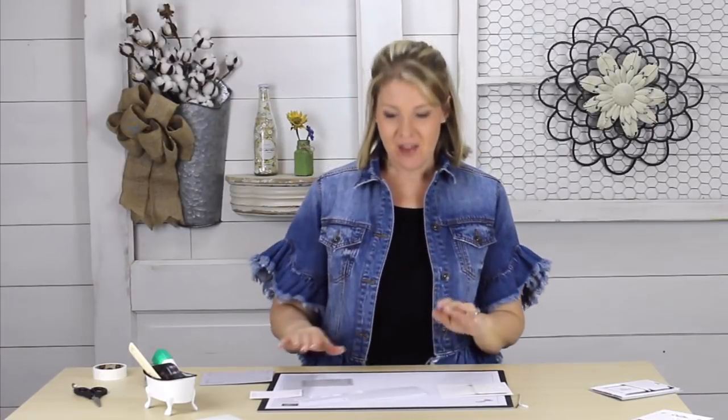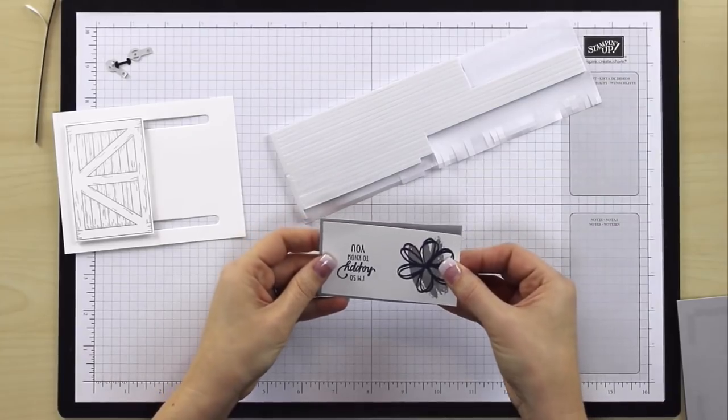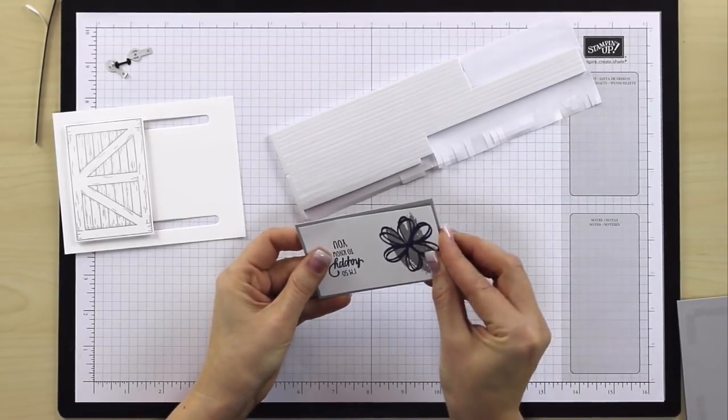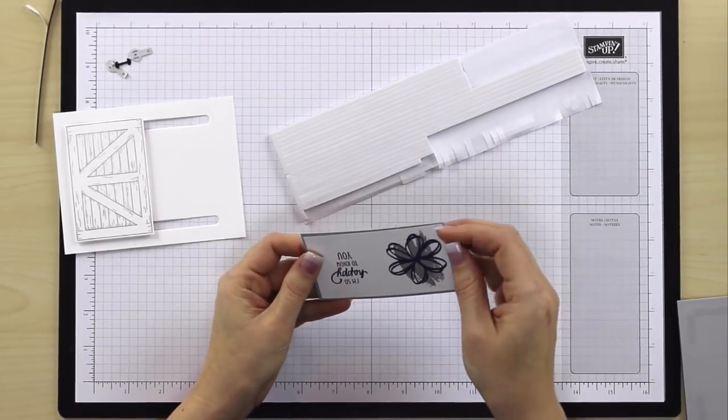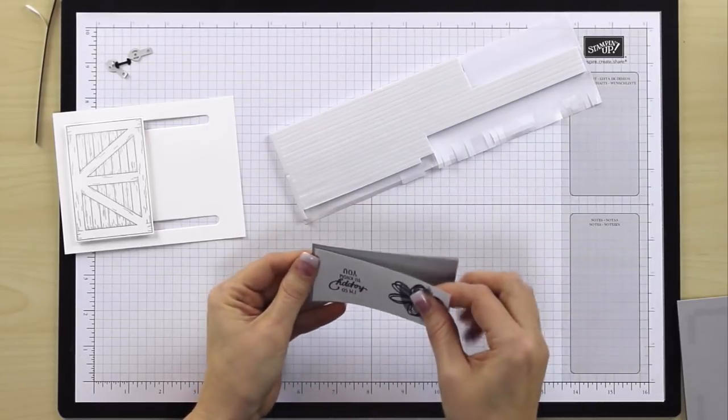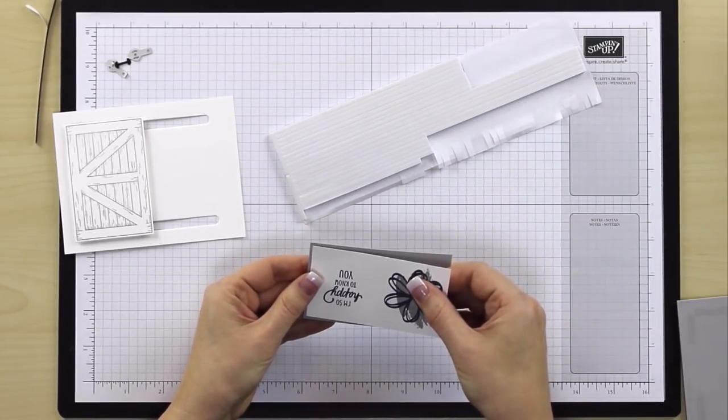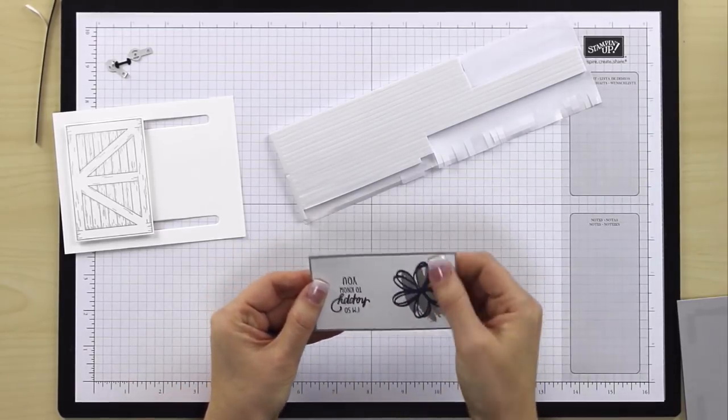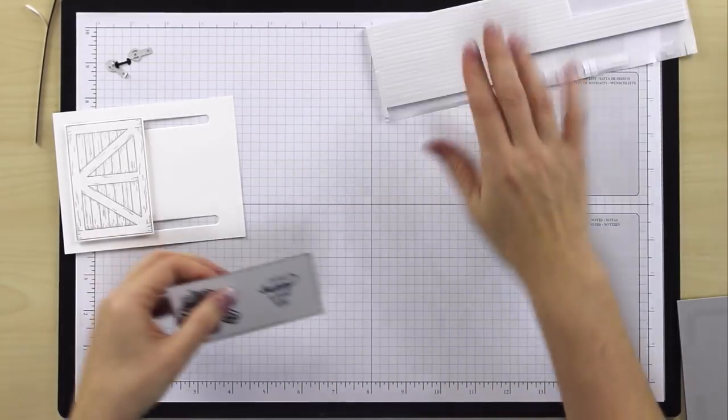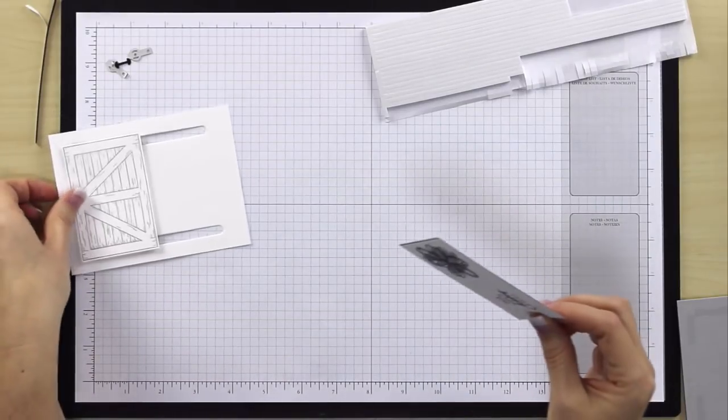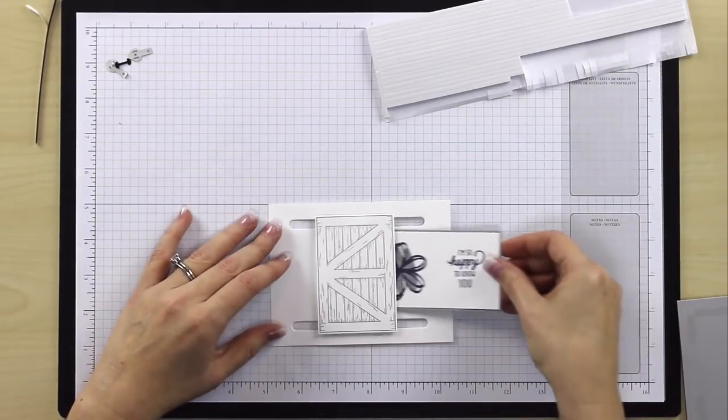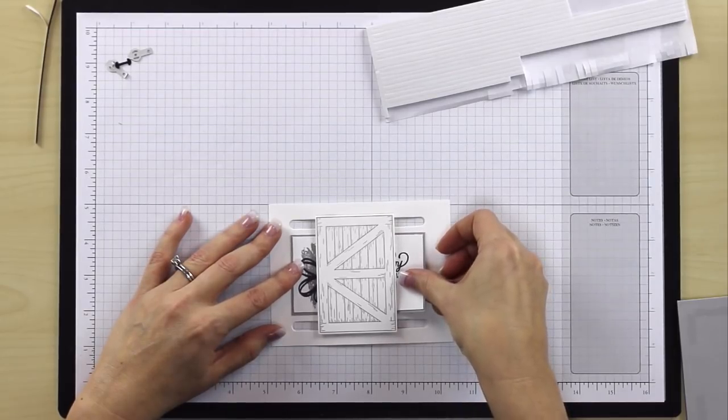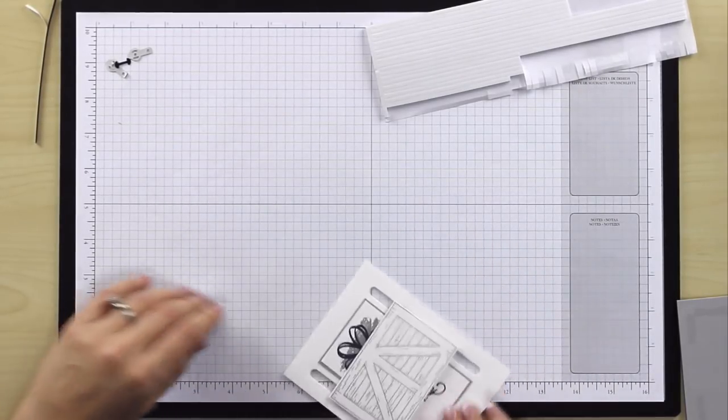I'm going to take our stamped layer and I'm going to put it onto a mat of Smoky Slate. You know what? I'm going to take that off and try to actually put it on straight. Added bonus. So we're going to have this. Now when we go to put this on our card, just make sure that you're not using dimensionals or else your door is not going to slide as well. So I'm just going to put this in place into the middle. So that part's done.